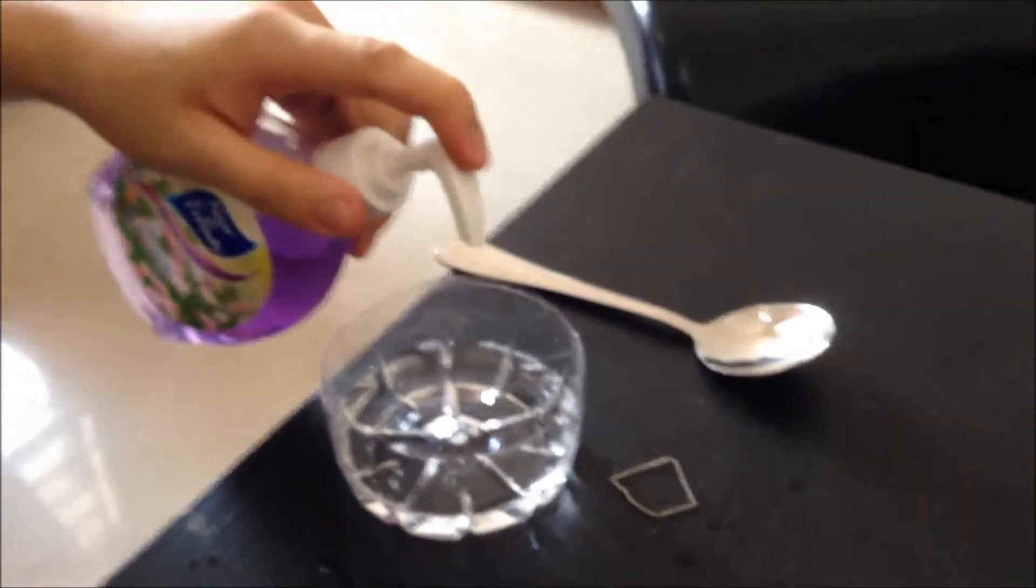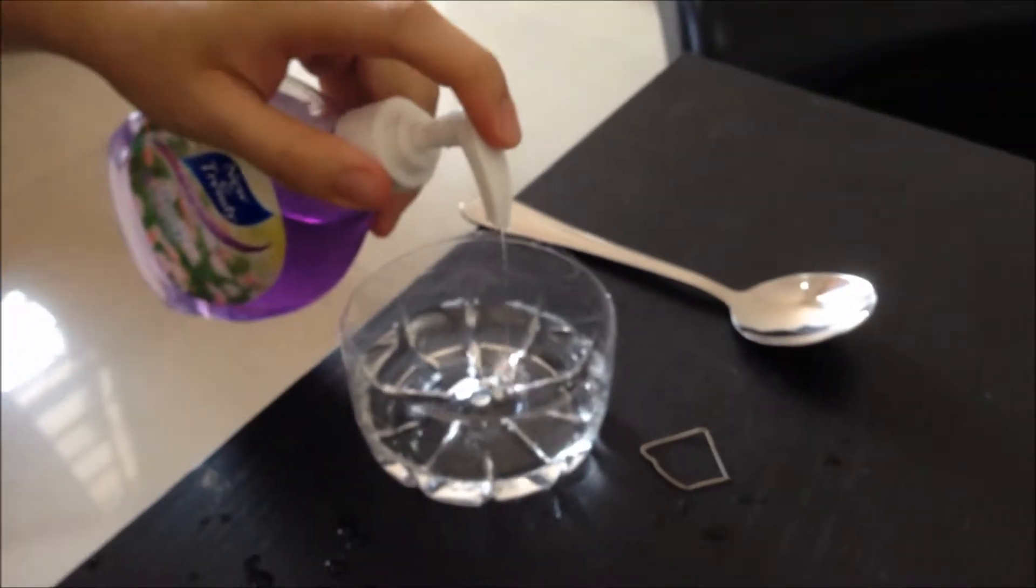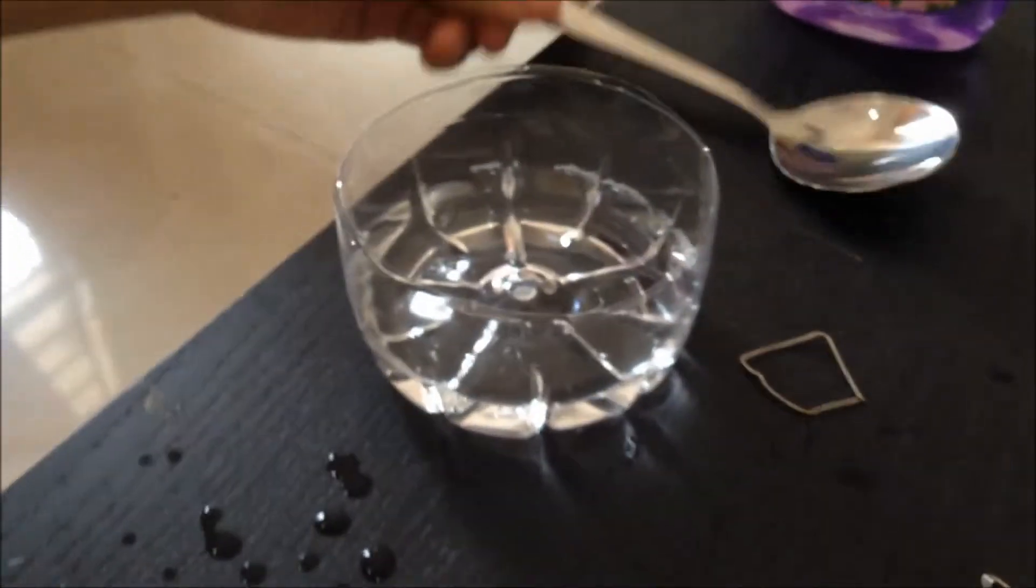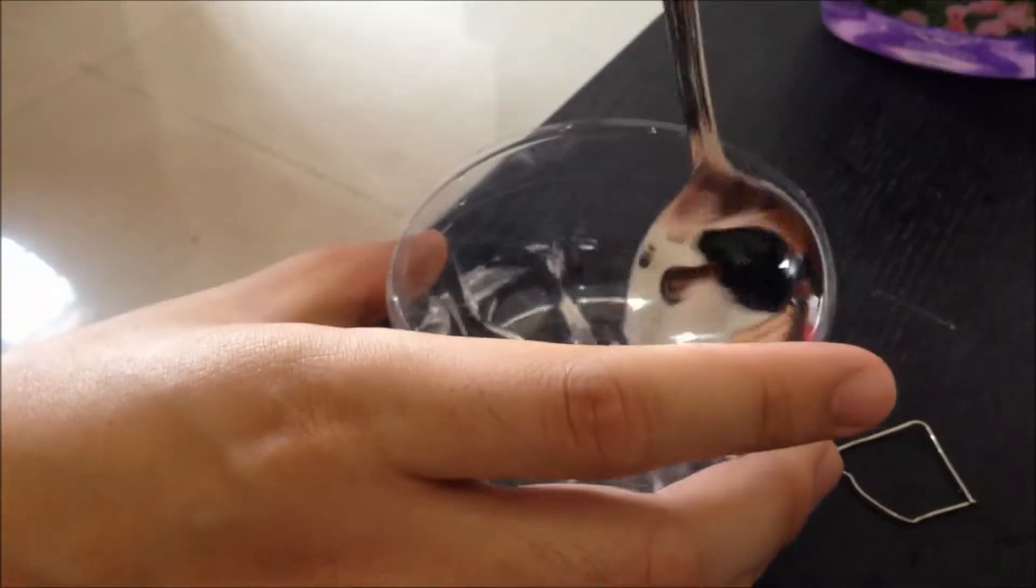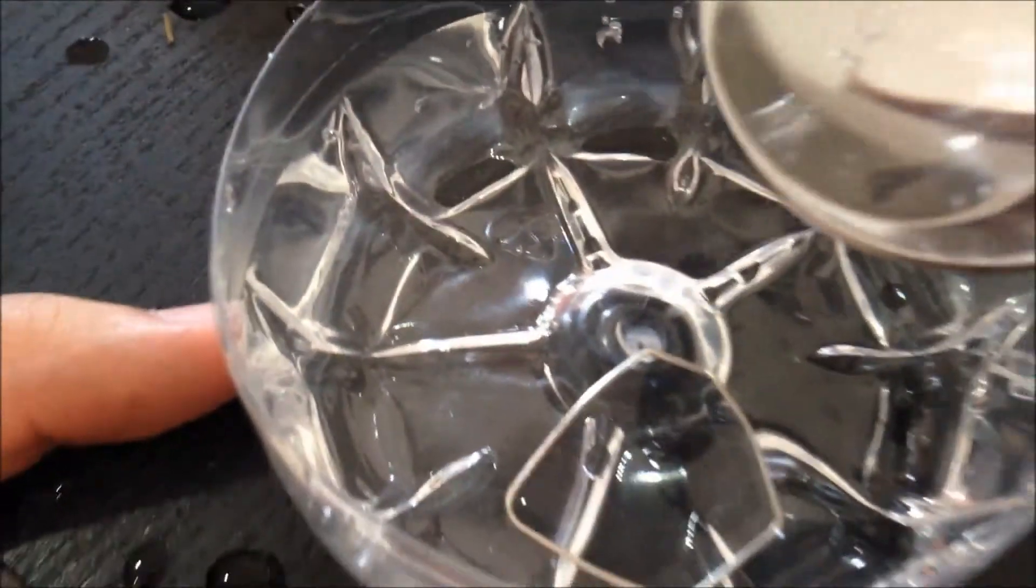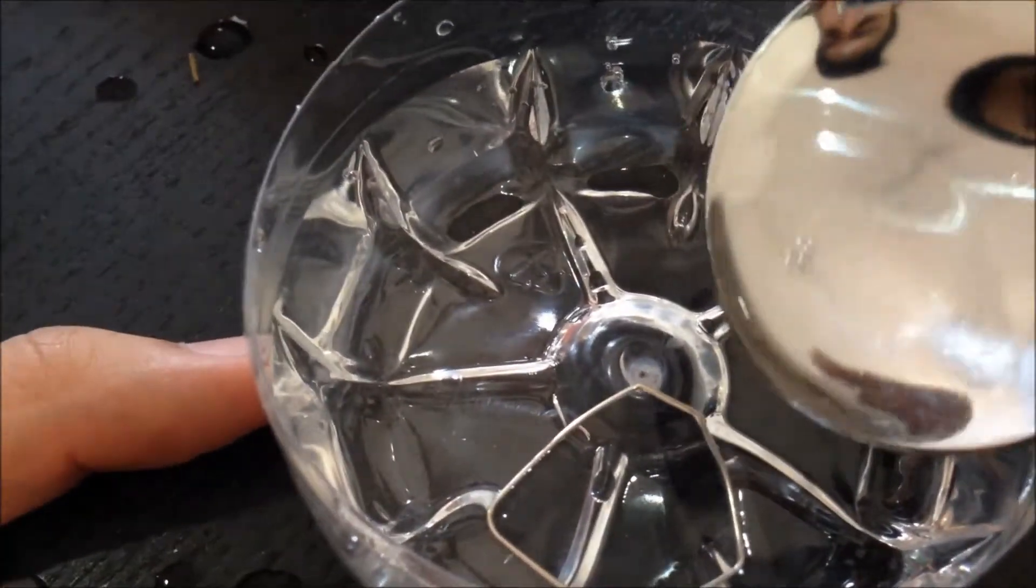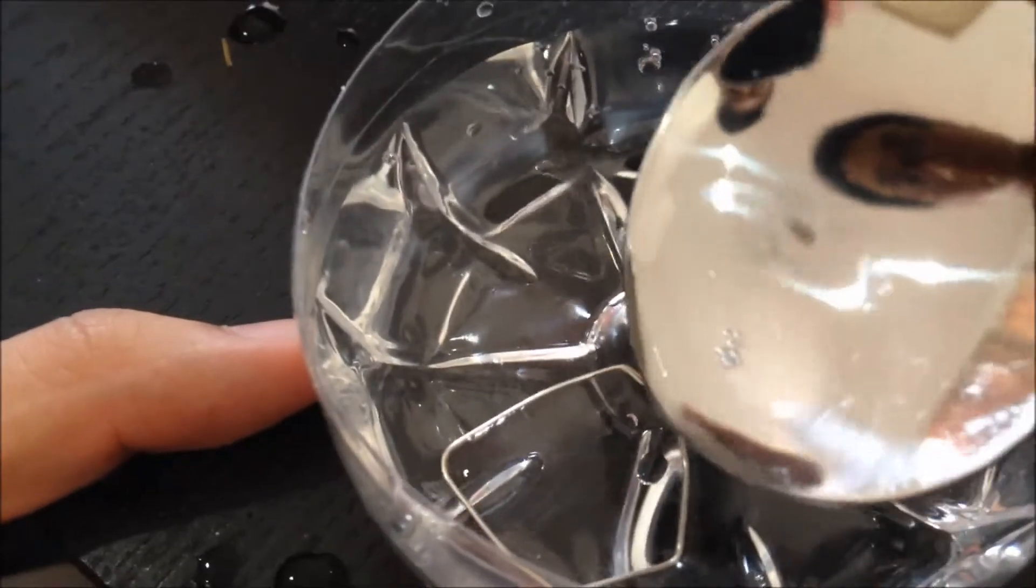This is because surface tension of water is supporting the weight of the paper clip. You probably call a surfactant soap. Soap is a good example of surfactant. If we add surfactant solution to the surface of water supporting the paper clip, the surfactant interrupts the surface tension and the paper clip sinks.